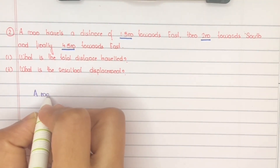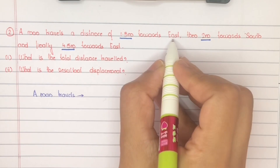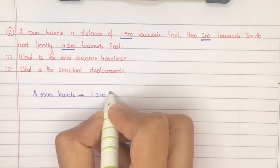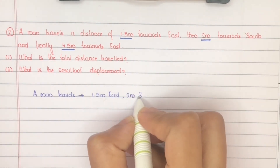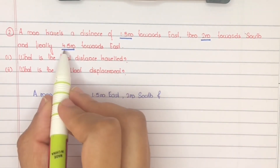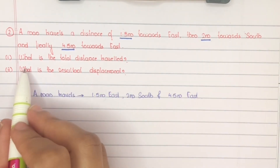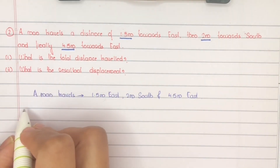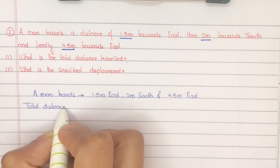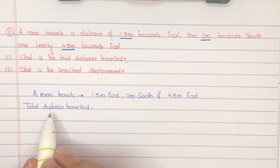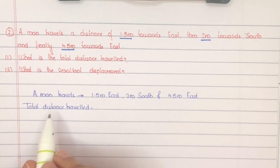Given that a man travels 1.5 meter east, then 2 meter south, and finally 4.5 meter east. The first question is to find the total distance. Total distance traveled — what is the definition? It is the actual length of the path covered by a moving body.